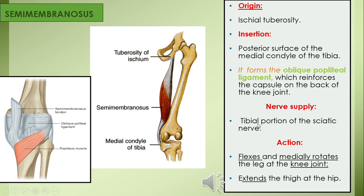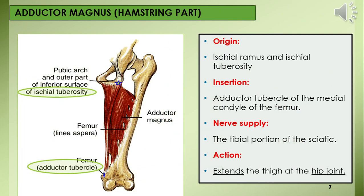Semimembranosus is supplied, like the other hamstrings, by the tibial portion of the sciatic nerve. It extends the thigh at the hip joint, flexes the leg at the knee joint, and is a medial rotator of the leg especially in the mid-flexed position. Through the oblique popliteal ligament, it reinforces the posterior capsule of the knee joint.